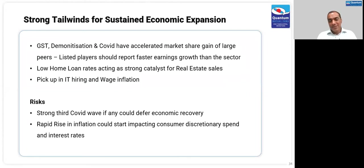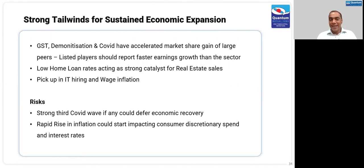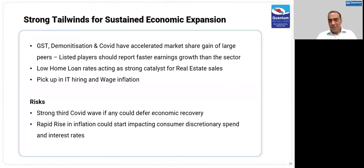You are seeing some impact from the rapid rise of inflation impacting consumer discretionary spends. Auto companies this year have already taken four price hikes, impacting demand for automobiles. But that is temporary — given the earnings upcycle and wage upcycle coming through, you should see demand catch up to the increase in prices. We do not expect that to derail the economic recovery.